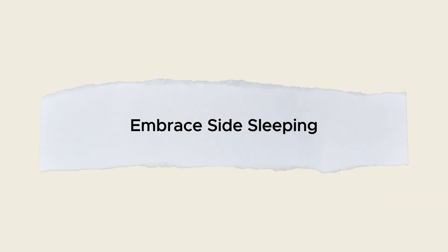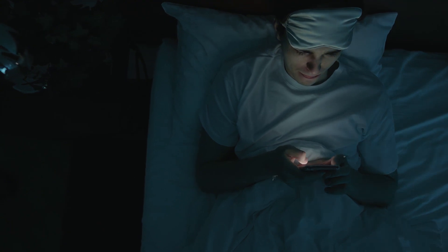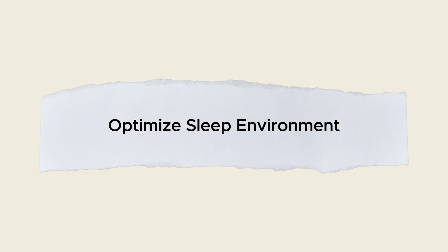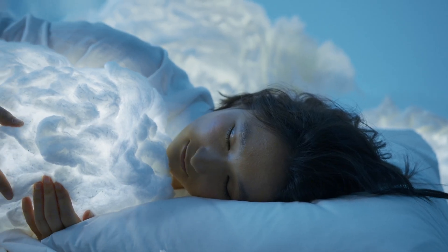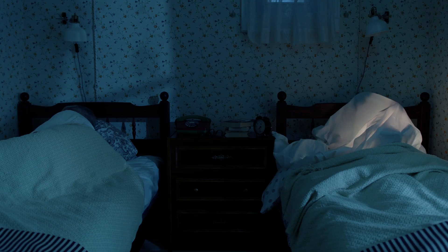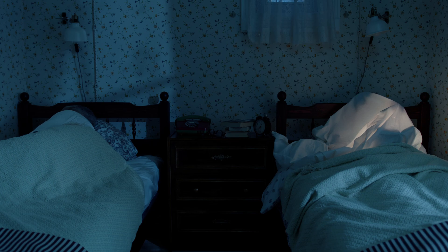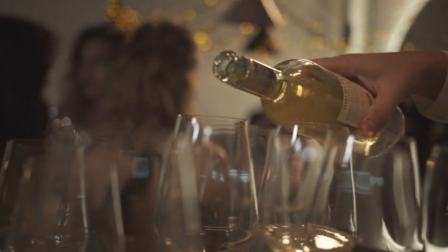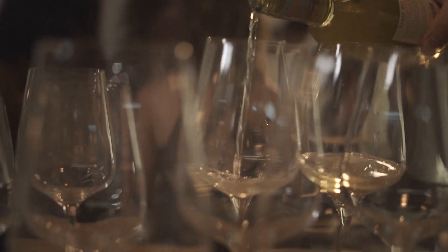Reduce screen time before bed. Blue light from devices suppresses melatonin, fragmenting deep sleep stages. Optimize sleep environment. A cool, around 65 degrees Fahrenheit or 18 degrees Celsius, dark and quiet room minimizes awakenings and maximizes slow-wave duration. Limit alcohol and heavy meals at night. Both disrupt deep sleep and constrict glymphatic flow.